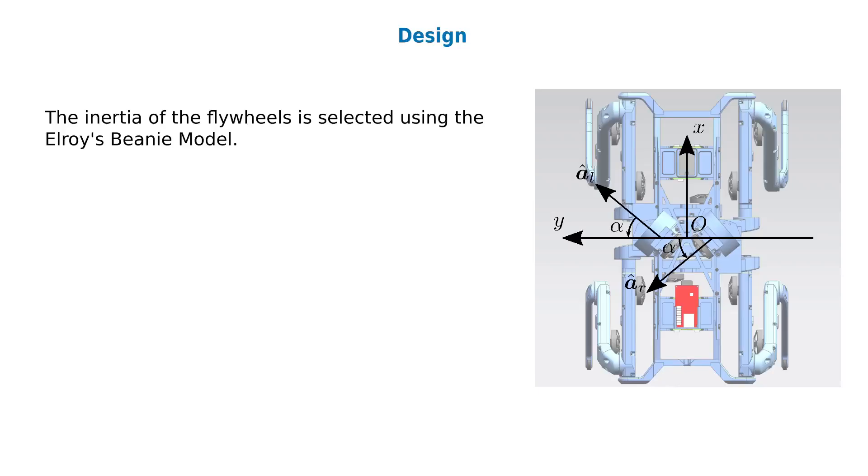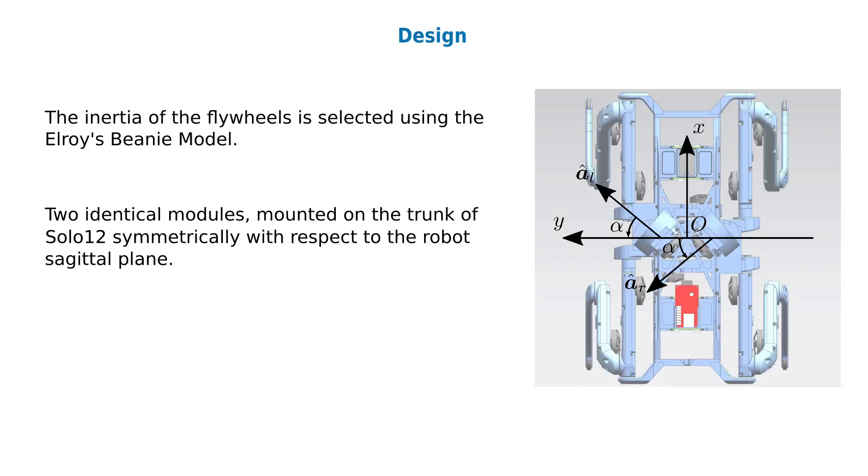Using the Elroy's Beanie model, we selected the inertia of the two flywheels. These are mounted on the trunk of the robot, symmetrically with respect to the sagittal plane. The axes of rotation of the two flywheels are incident, to maximize the trade-off in controlling both the roll and pitch angles of the robot.